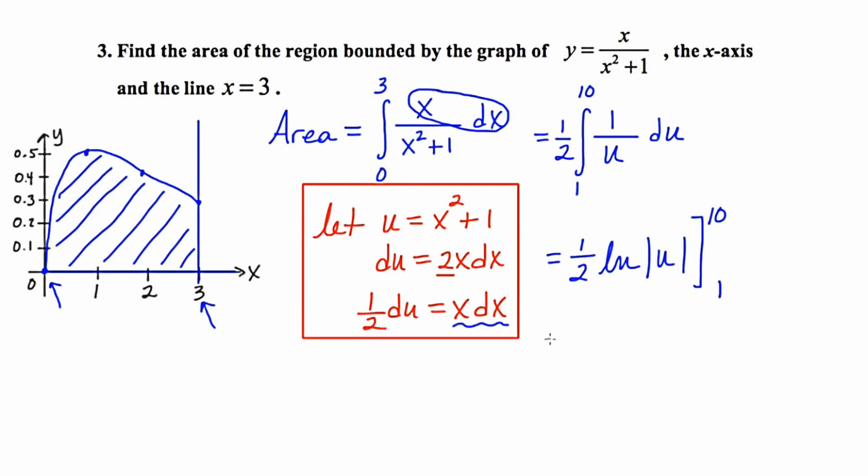So I'm going to end up having 1 half the natural log of 10. And notice how I've dropped the absolute value bars. The absolute value of 10 is just 10 so I don't need the bars anymore. Minus 1 half the natural log of 1.